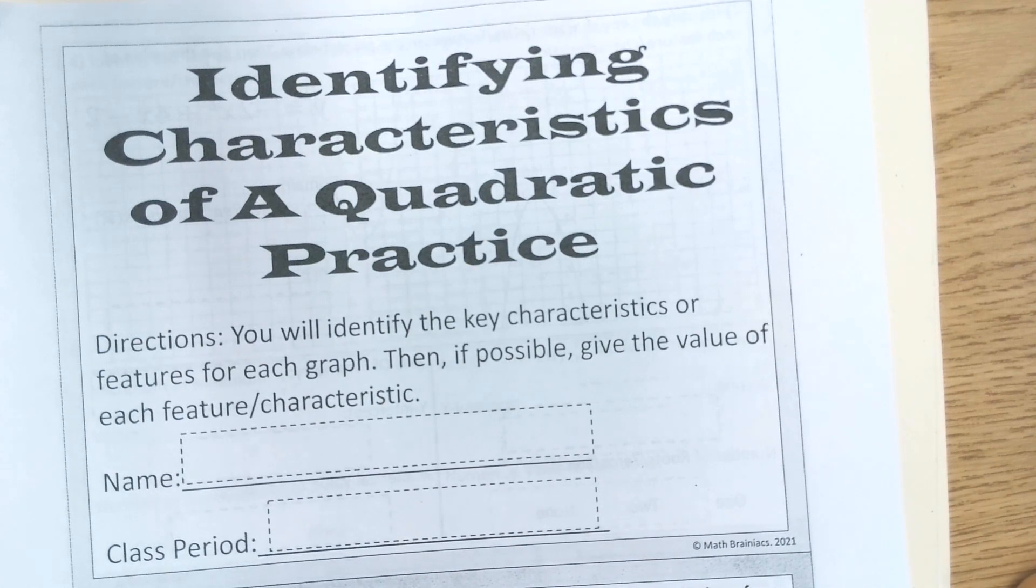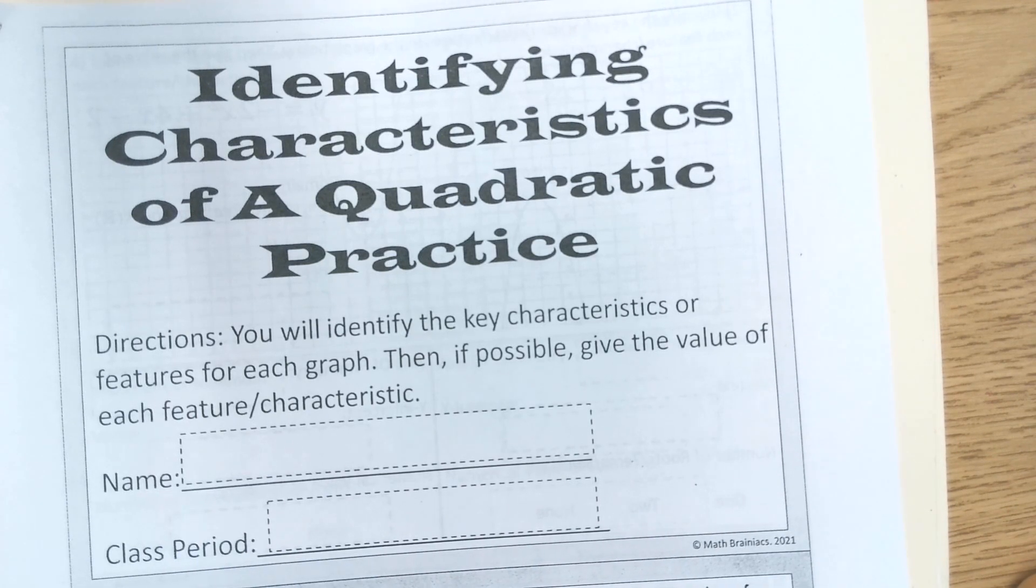Today we are doing the assignment that says identifying characteristics of a quadratic practice. Go ahead and put your name and your class period on there. You need to have out your calculator and you also need your journal.